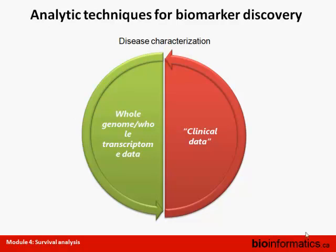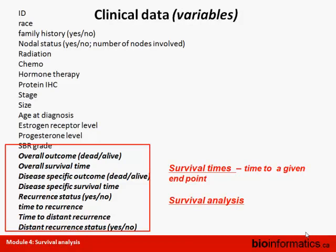Disease characterization is composed of two major components: the molecular profiling of a whole genome or a whole transcriptome, and clinical data. These are two complementary data that should be used together in order to do reasonable research. The clinical data is intrinsically different from the high-resolution molecular profiling data you've been seeing so far in the course.